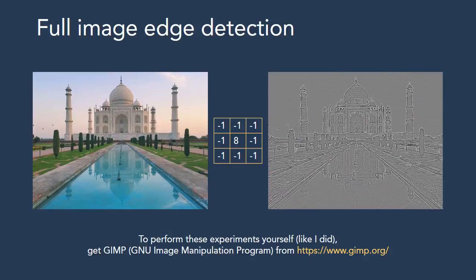Then we have edge detection. Edge detection works by subtracting the color of all neighborhood elements from the given pixel — it multiplies the central pixel by 8 and subtracts the values of all 8 surrounding pixels. If the image is continuous, the output comes out to be 0; but at boundaries where color changes drastically, the output is non-zero. So the output image is gray in all continuous areas, with white and black lines appearing at the edges. Considering this image of the Taj Mahal, we see that the output shows a lot of gray with white and black lines appearing at the boundaries of various objects.